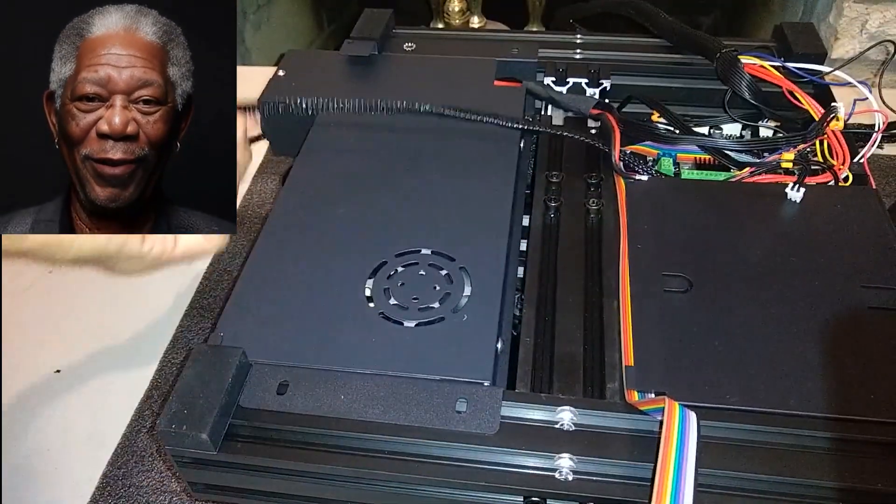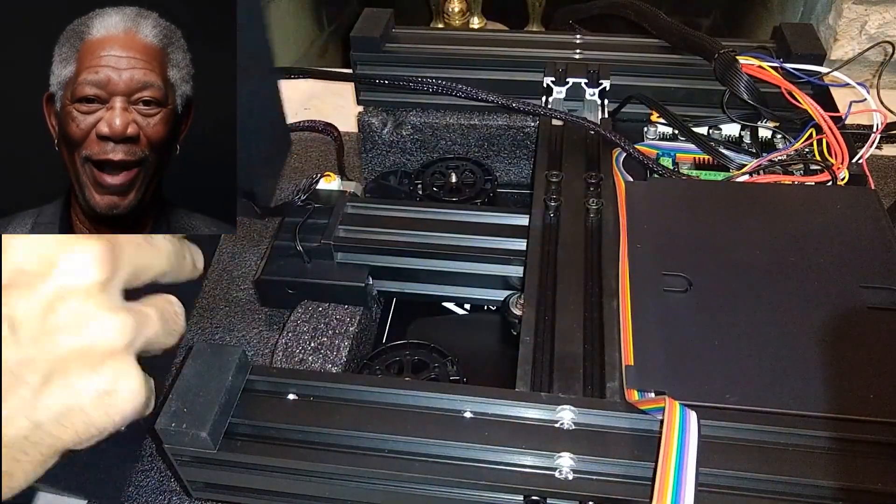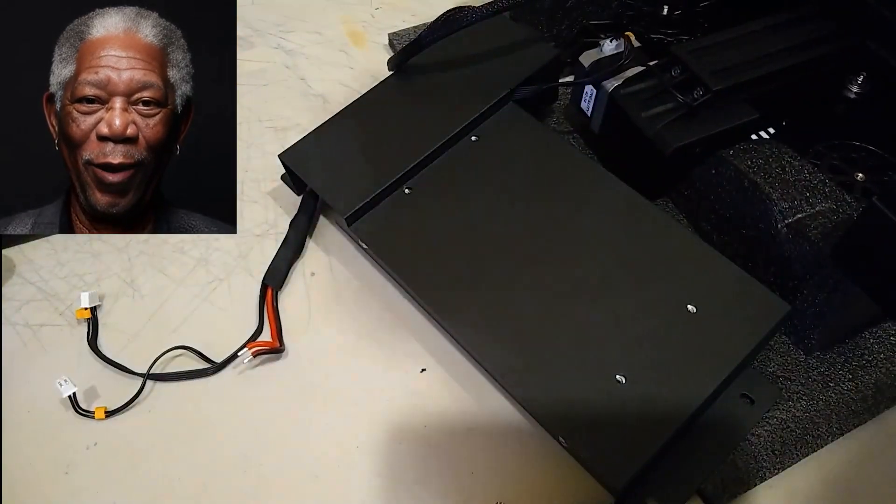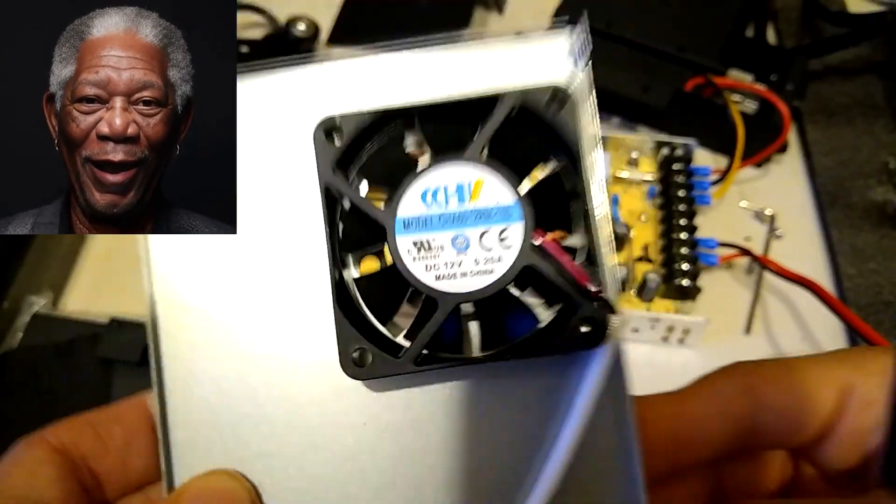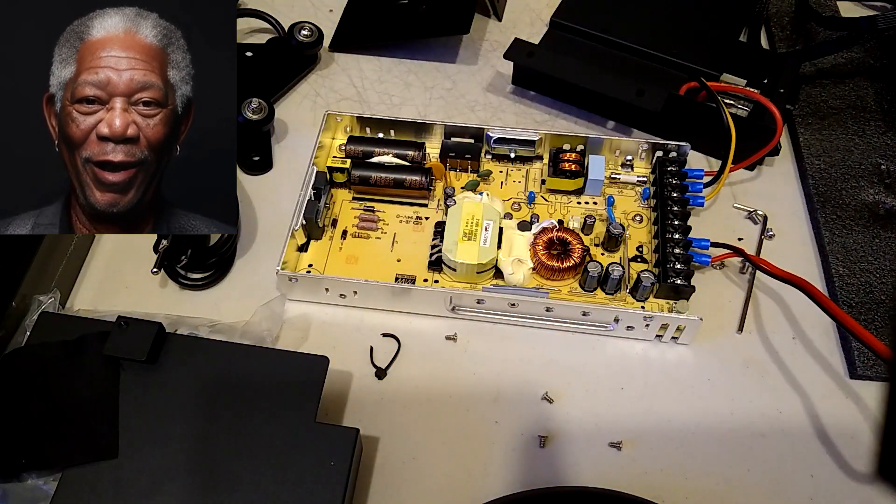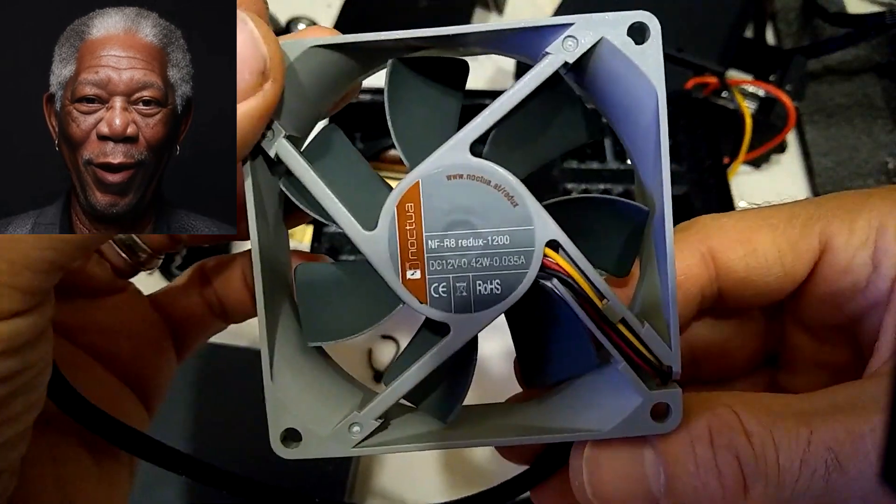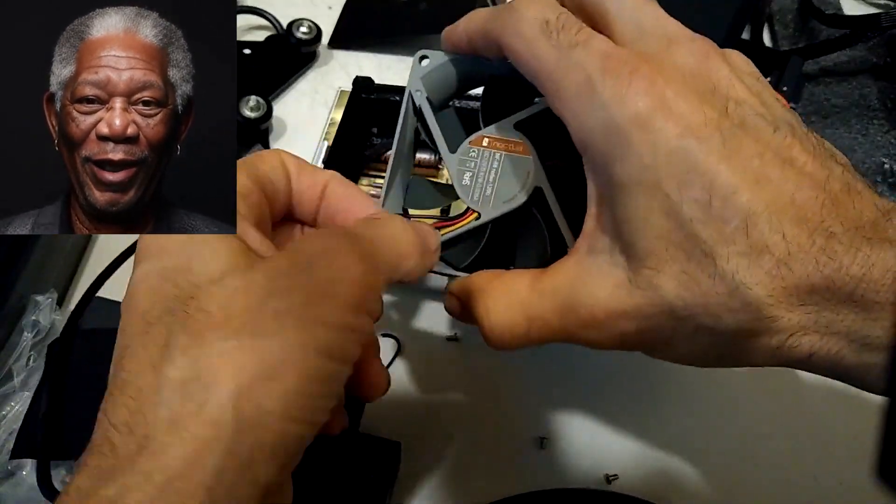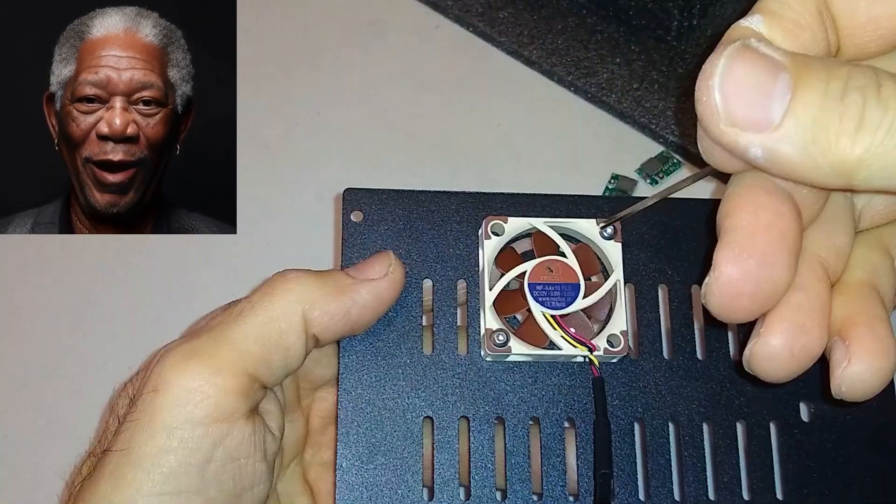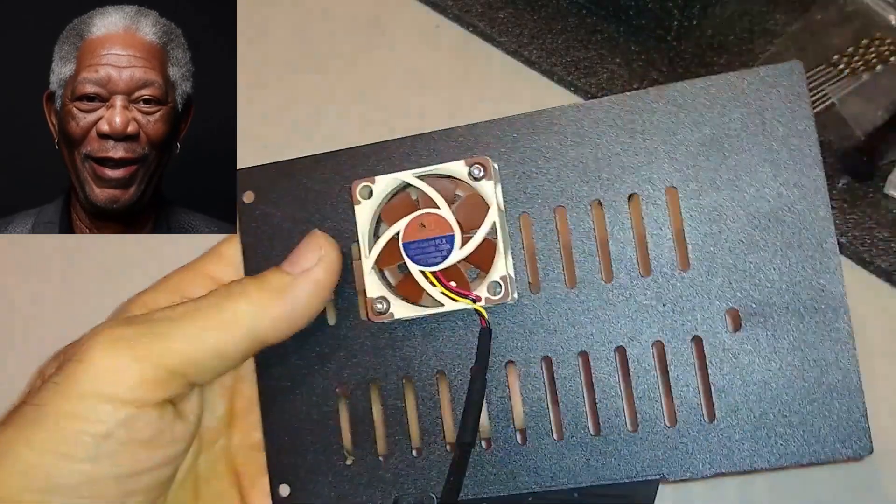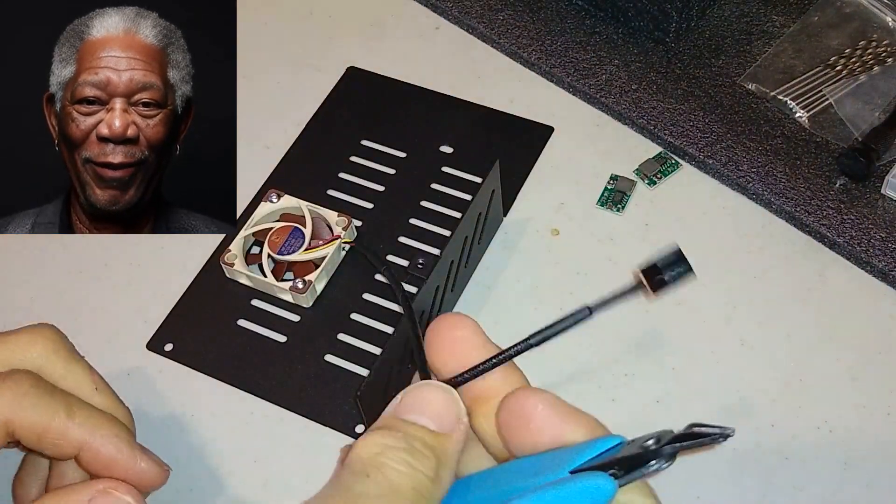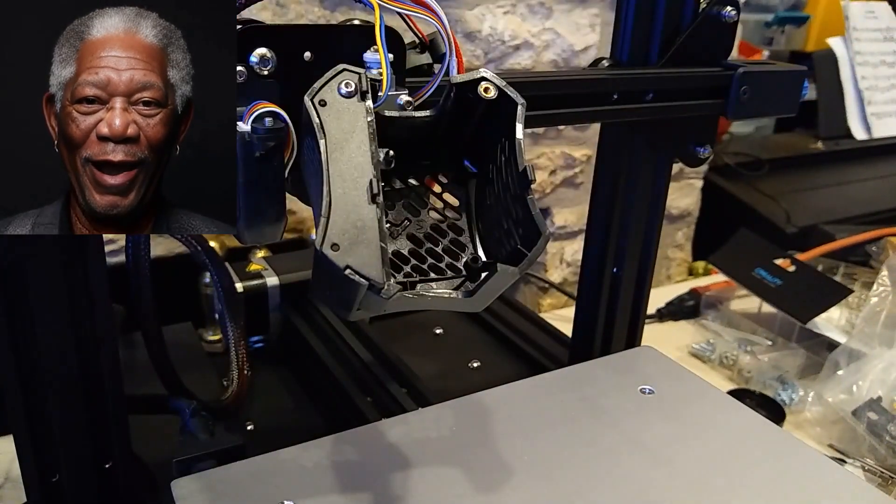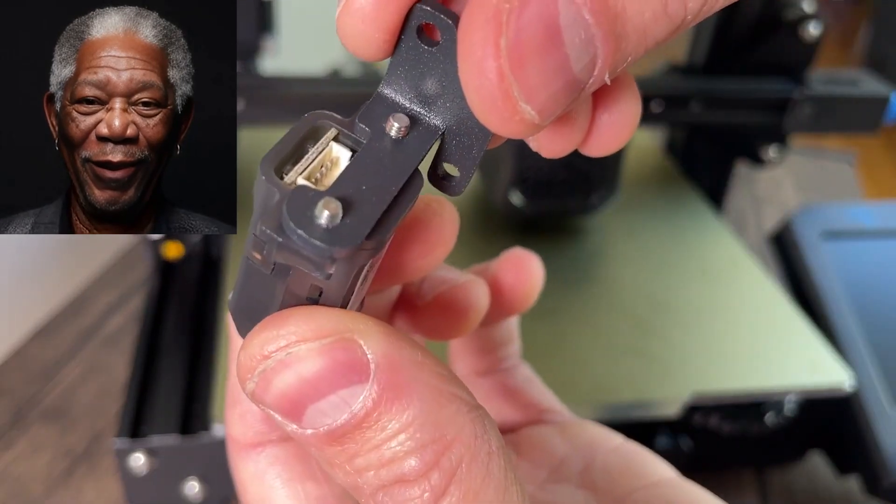Number 5: Silent operations with Noctua fans. To create the perfect printing environment, we'll replace the noisy stock fans with silent Noctua fans. These fans not only reduce noise, but also improve cooling efficiency, resulting in better print quality for intricate and challenging models. The improved airflow ensures consistent cooling, reducing the chances of overheating and warping during long prints. Enjoy a more tranquil printing experience without compromising on performance.